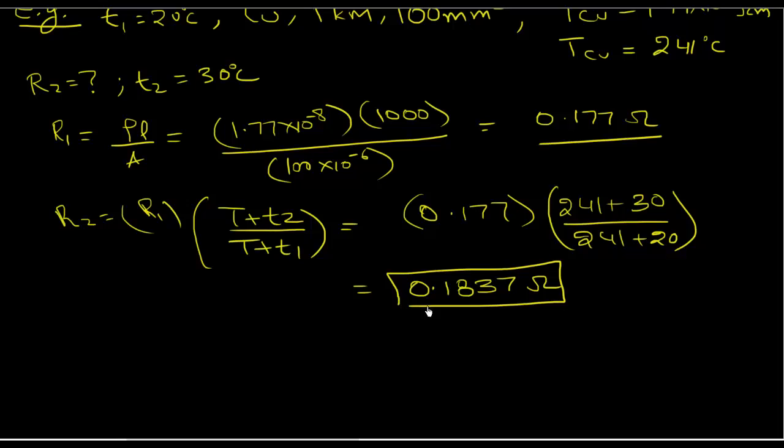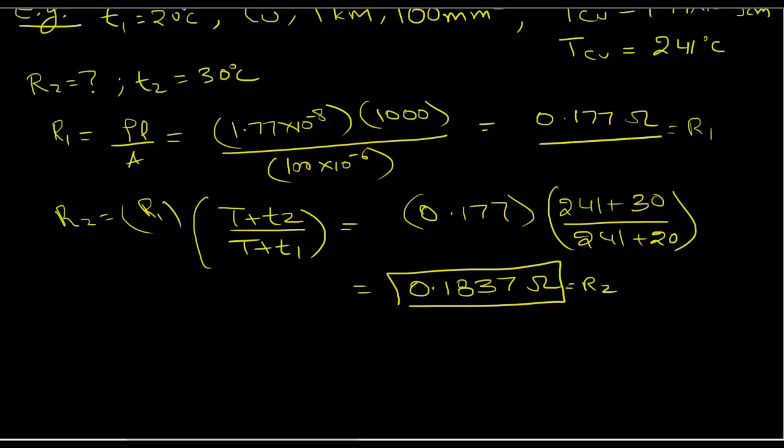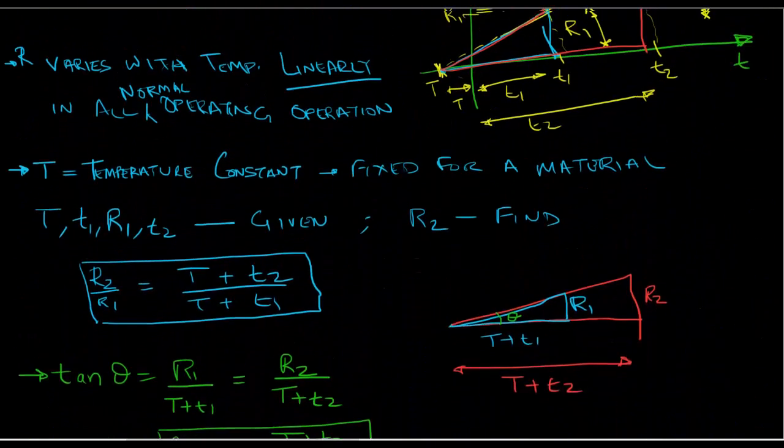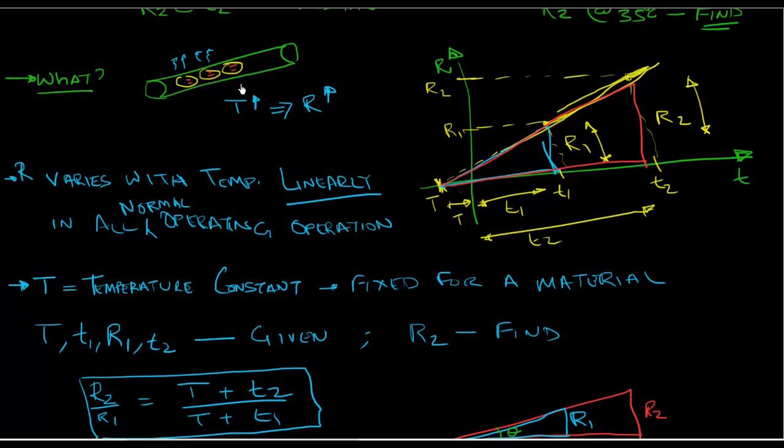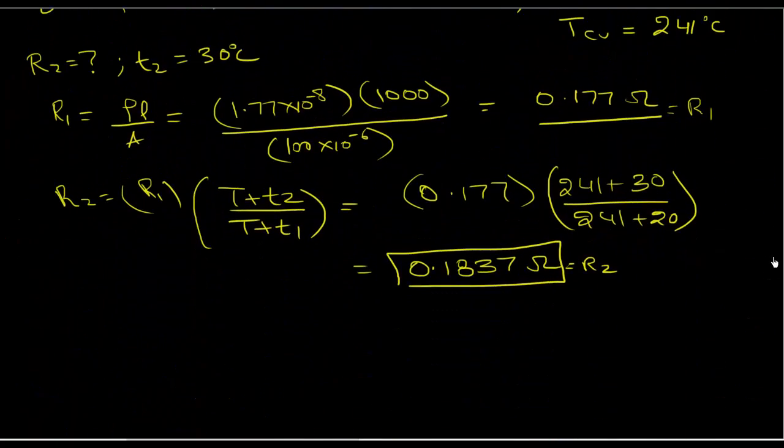So that is your R2. This is your R1. The one observation I want you to make is R2 is higher than R1, which is what we concluded when we were discussing how temperature would impact our conductor. We said as the temperature rises, the resistance would rise. And that's what we see here mathematically happen as well.